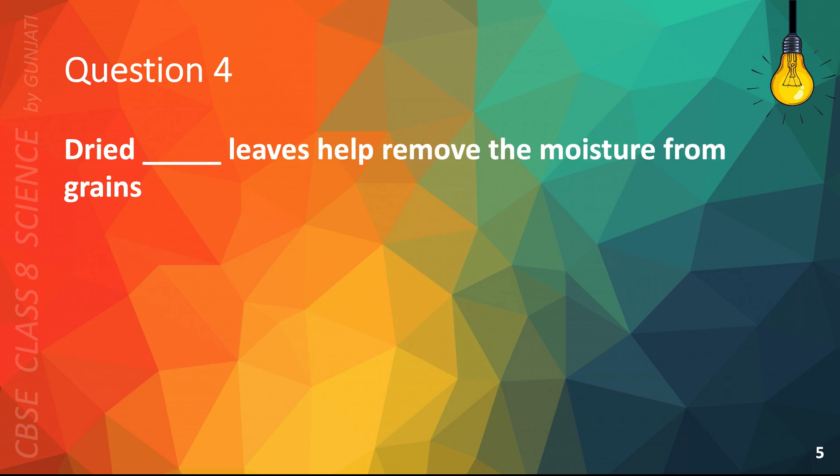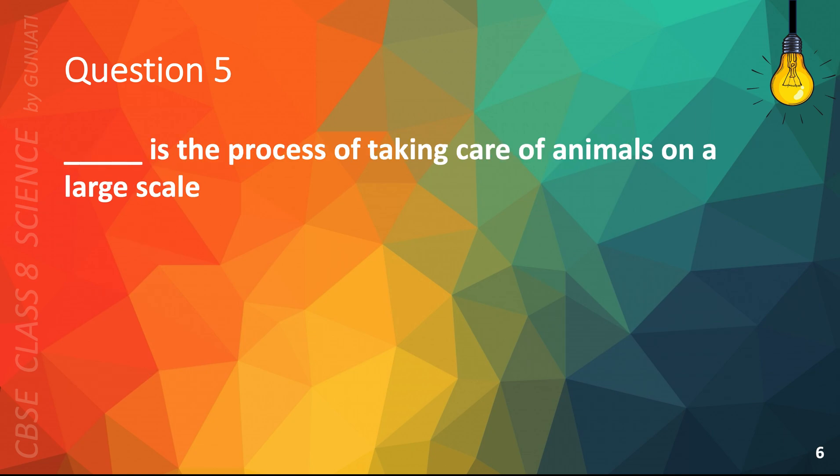Question 4. Dried blank leaves help remove the moisture from grains. A. Neem, B. Paper, C. Mango, or D. Apple. The correct answer is A. Neem.